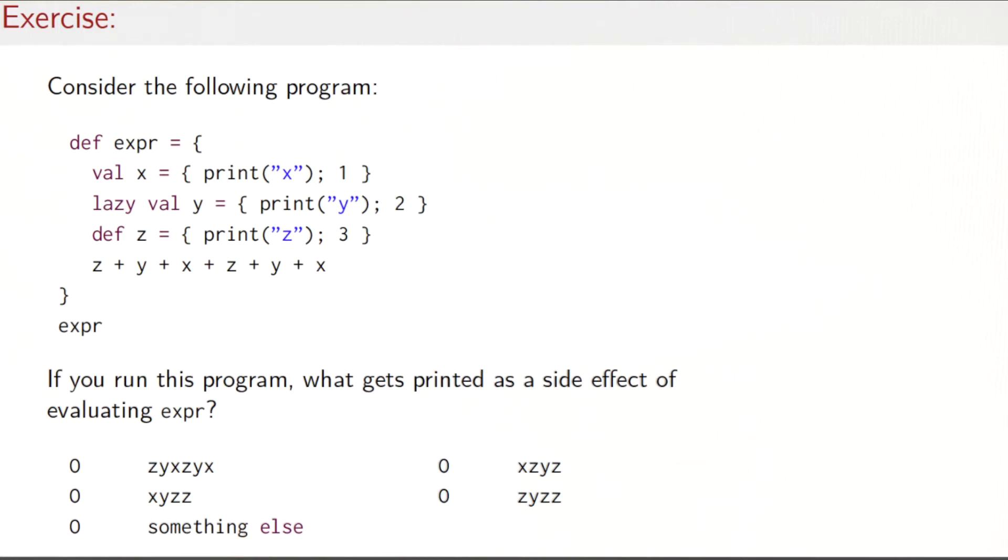Is it one of these four or maybe something else? Let's see how we would approach this problem. When we evaluate expr, we first have to evaluate the three definitions. We have a val definition here—the right hand side gets evaluated immediately and would print an x. The lazy val and the def would not be evaluated at the point of definition; they would be delayed. Then we would get into the result expression where we first demand the value of z, so that would print a z.